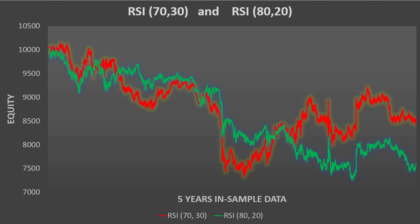Looking at RSI alone: the red curve is the values with 70 and 30, but when we make those levels more aggressive, we don't see an improvement — the green equity curve has actually got worse. Furthermore, we go from just over 8,000 trades down to 1,600 trades. This number of trades is now a real concern. Not only did the results get worse, we're also in the realms of having major problems going forward. So my view is that we have to stick with levels of 70 and 30 in order to keep this higher trade count.